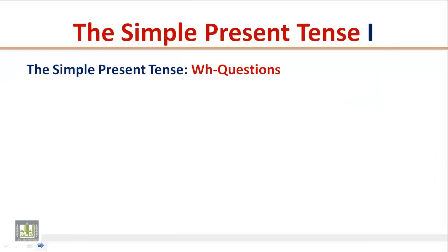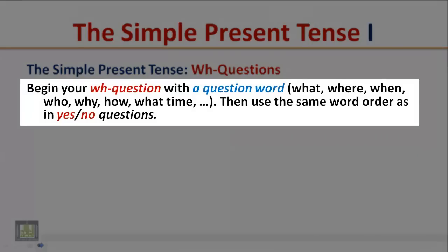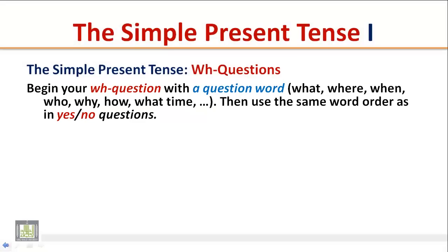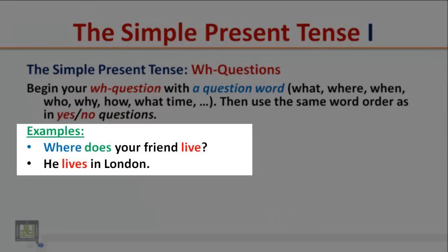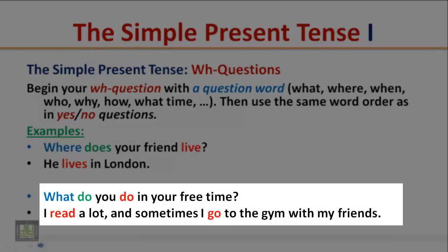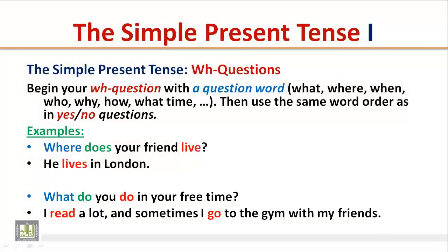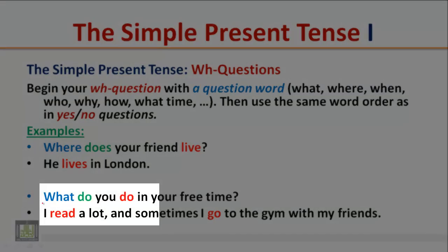The Simple Present Tense: WH Questions. Begin your question with a question word such as what, where, when, who, why, how, what time, etc., then use the same word order as in yes/no questions. Examples: 'Where does your friend live?' 'He lives in London.' 'What do you do in your free time?' 'I read a lot and sometimes I go to the gym with my friends.' The word order in WH questions is: question word, auxiliary verb, subject, base form of the verb.